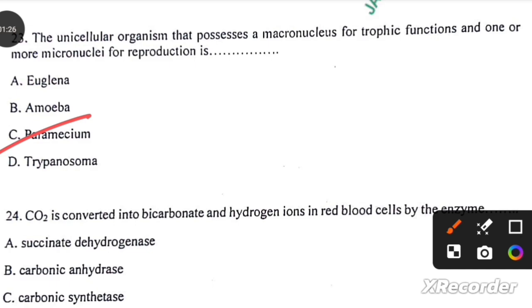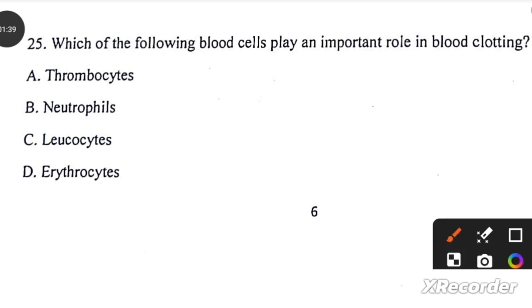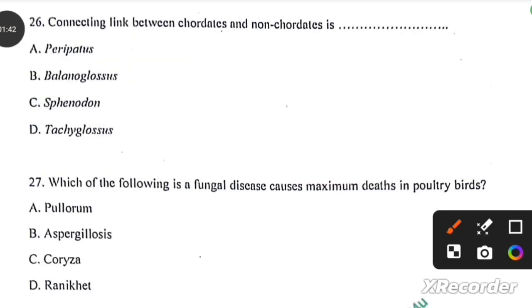CO2 is converted into bicarbonate and hydrogen ion in red blood cell by the enzyme carbonic anhydrase. Which of the following blood cells play an important role in blood clotting? Isertransrap, option A. Connecting link between chordates and non-chordates is Isertransrap, option B.